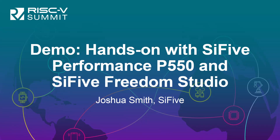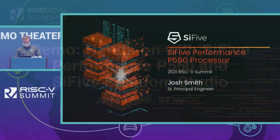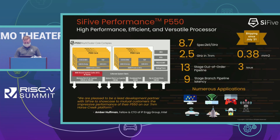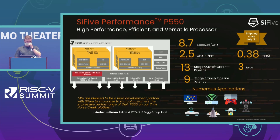Hi, my name is Josh Smith. I'm a senior prints engineer with Sci-5 and today I wanted to give a little bit more detail about this P550 processor which has come up in a couple of Sci-5 talks earlier today. The Sci-5 P550 was made generally available earlier this year in July of 2021 and it's our first high performance out of order application processor.